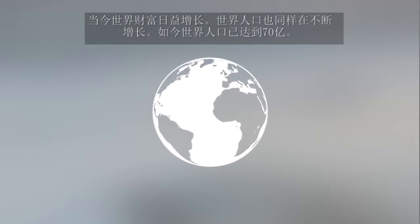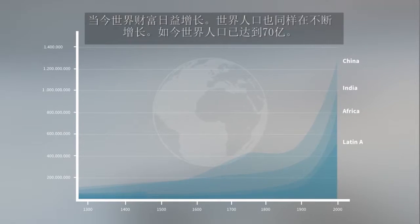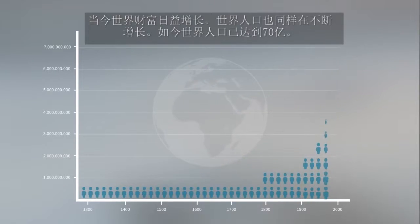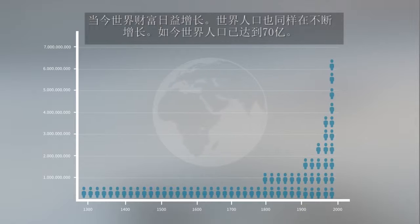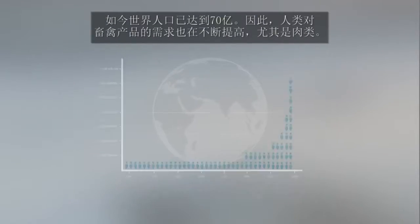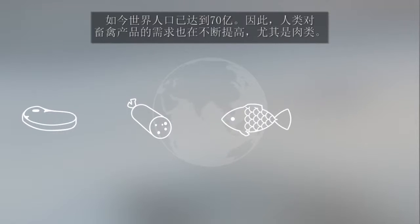Wealth is increasing all over the world, and so is population growth. This means that we're 7 billion people on the planet today. As a result, the global demand for animal products, particularly meat, is also increasing.